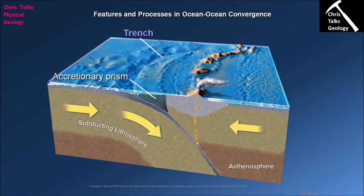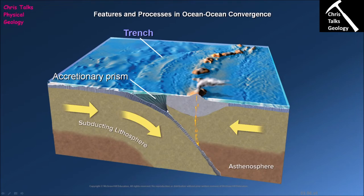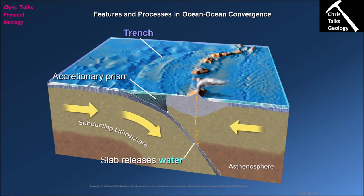Next we have the accretionary prism, which is essentially a chaotic mass of different rock types all jumbled together. The oceanic crust has a layer of sediment on top, and as it gets pushed down, that sediment gets scraped off. Bits of oceanic crust also break off, and volcanic rocks from island eruptions are added too. All of this mixes together in this triangular-shaped region we call the accretionary prism.